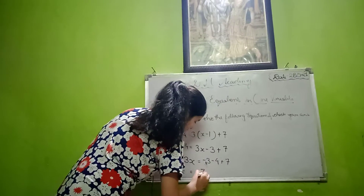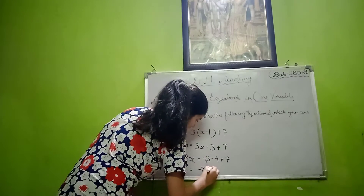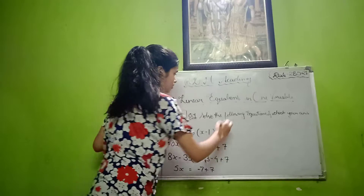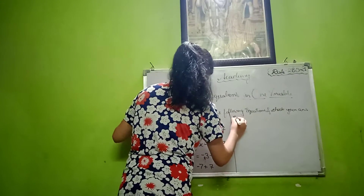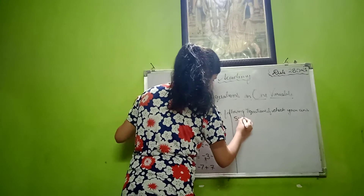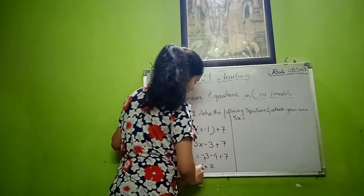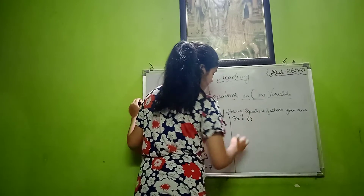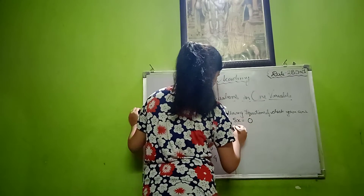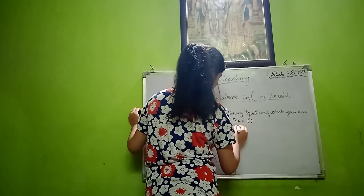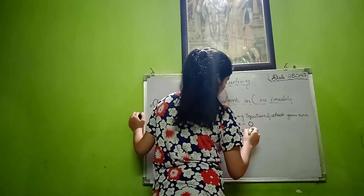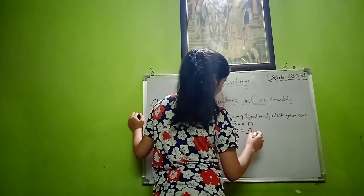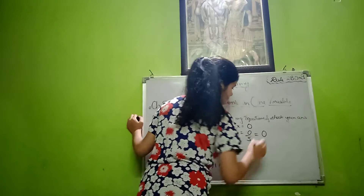7, sign minus ka, and plus 7. So, 5x equals to minus plus minus, zero. So x equals to 0 upon 5, which means x equals 0.